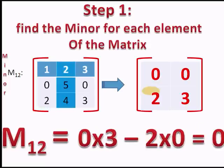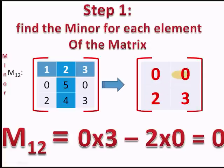The second element is A12, which is 2. Its minor is represented by M12. Leaving the first row and second column — since 2 belongs to the first row and second column — the remaining elements are 0, 0, 2, and 3. Cross-multiplying: 0×3 minus 2×0 gives 0. So M12 is 0.